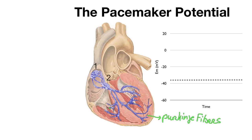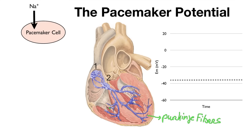The SA node functions as the pacemaker, so we're going to look at the pacemaker cells in the SA node. What is special about these cells is that normally there's a significantly higher conductance for sodium than there is for potassium. There is normally a driving force for sodium to rush into the cell, and potassium wants to leave the cell.